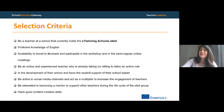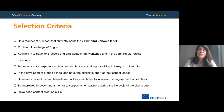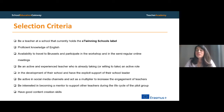To join this group, you have to meet the selection criteria. You must be a teacher at a school that currently holds the eTwinning Schools label, have a proficient knowledge of English, be available to travel to Brussels and participate in the workshop and semi-regular online meetings, be an active and experienced teacher willing to take an active role in school development, and have the explicit support of your school leader. You should also be active on social media to disseminate news and have an interest in becoming a mentor to support other teachers.